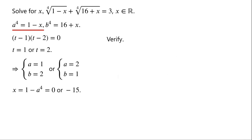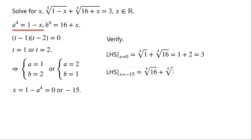Now we verify whether they are solutions of the original equation. When x equals 0, the left-hand side equals the fourth root of 1 plus the fourth root of 16, which is 1 plus 2, which is 3. When x equals negative 15, the left-hand side equals the fourth root of 16 plus the fourth root of 1, which is 2 plus 1, which is 3. So x equals 0 or negative 15 are solutions of the original equation.